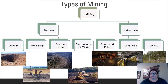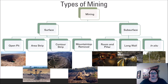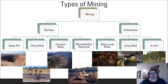In general, mining is done in one of two basic ways: surface or subsurface. Surface mining is used when the resource in question is close to the surface and generally easy to reach. This is done in one of four ways: open pit, area strip, contour strip, and mountaintop removal.